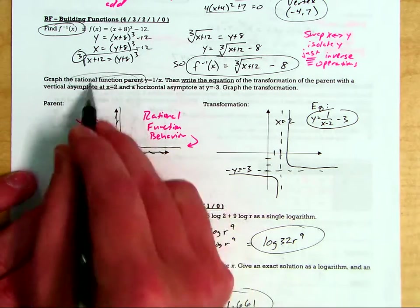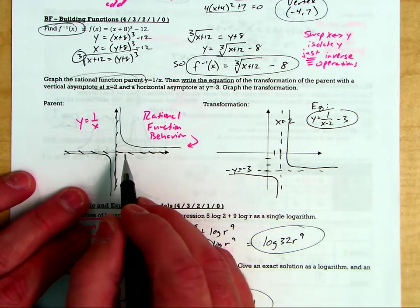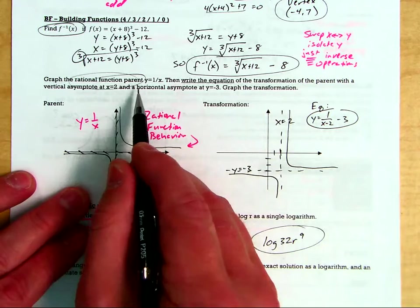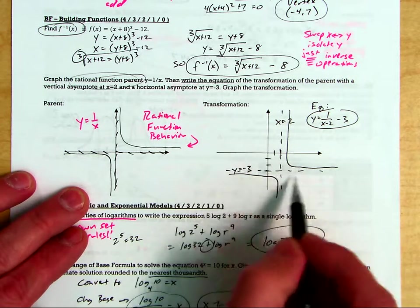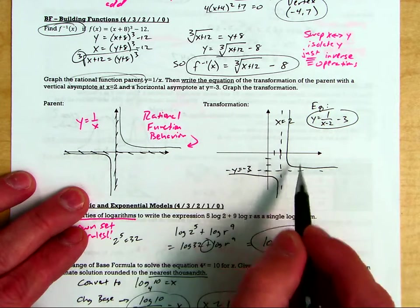You have to remember the rational function parent, especially going into higher levels of math. And then remember if we add an h or a k, it just moves the asymptotes up or down or left or right. And the branch behavior is still the same.